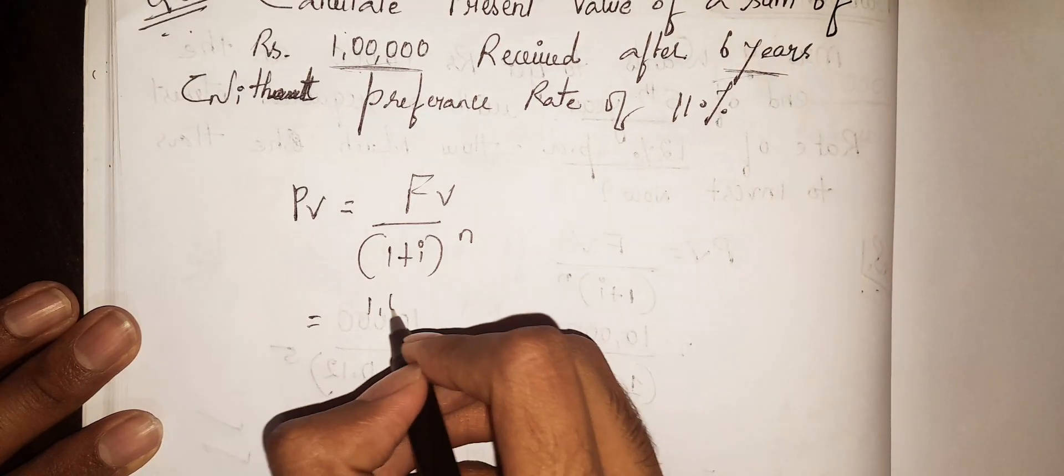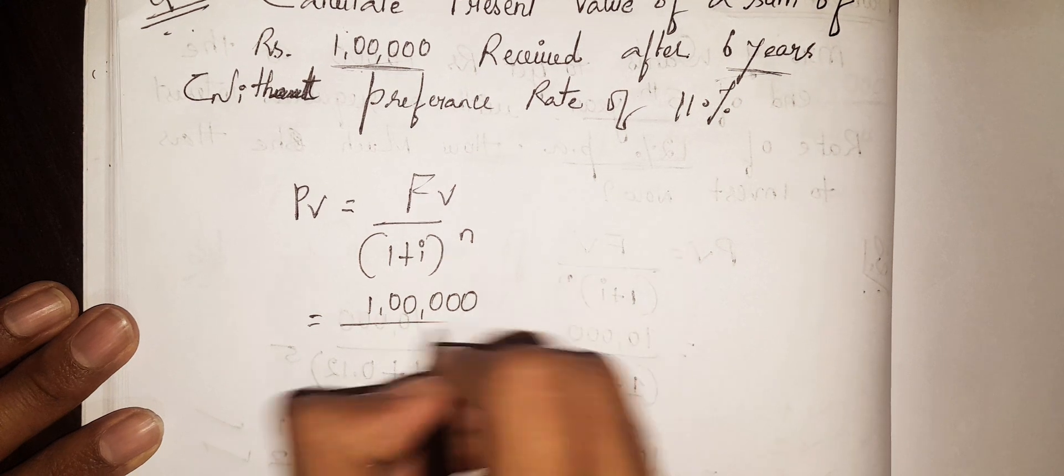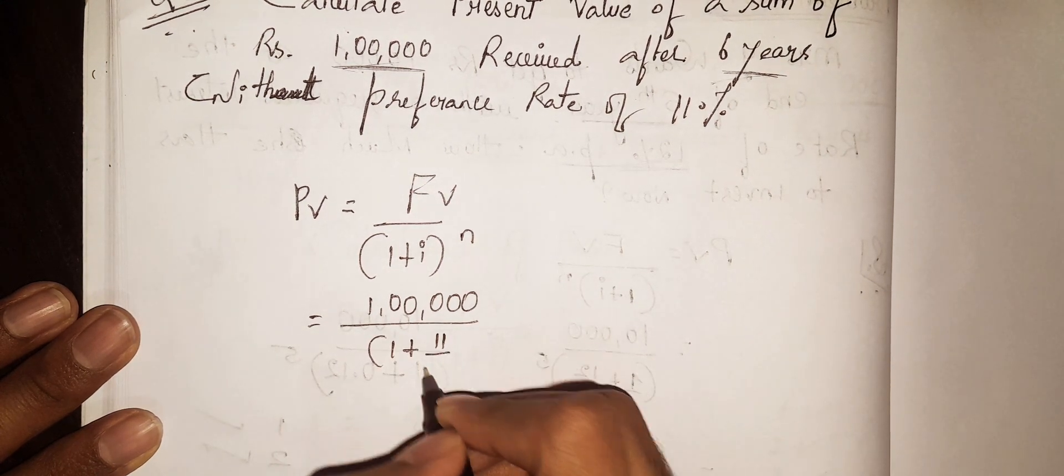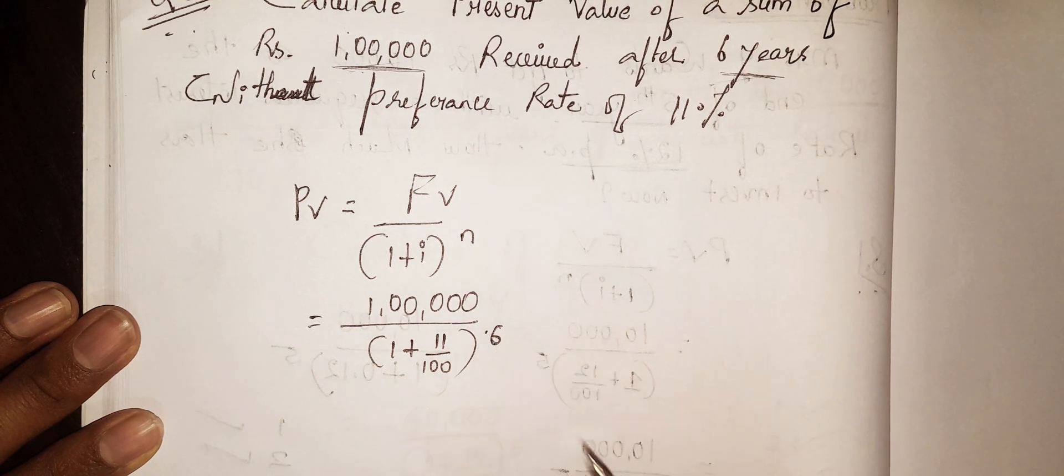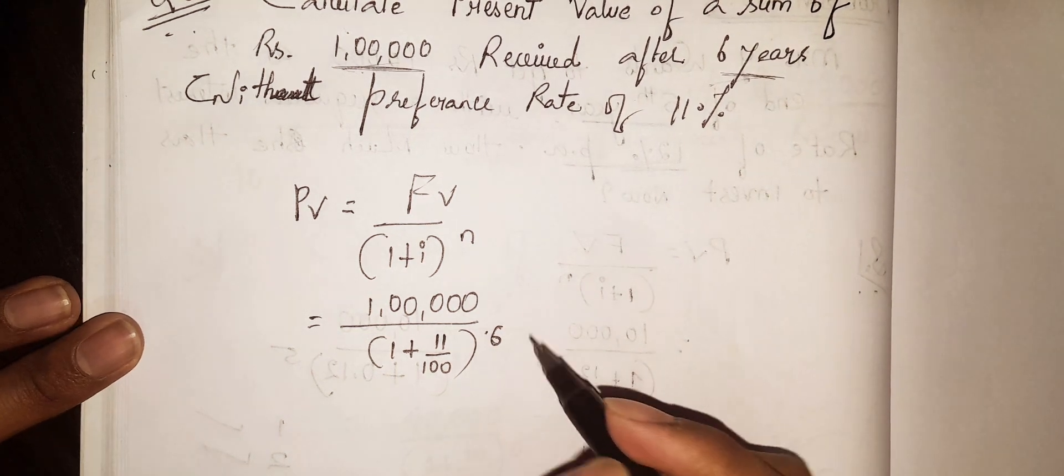So the future value is Rs. 1 lakh divided by 1 plus i, which is 11%, so 11 by 100. And he is receiving after 6 years, so to the power of 6.